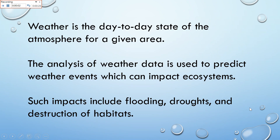Weather is the day-to-day state of the atmosphere for a given area. An analysis of the weather data is used to predict weather events, which can impact ecosystems. Basically, weather analysis is where they take and look at their data and then they predict what the weather is going to be like, so we can decide whether we want to wear shorts or pants or a jacket, or whether we need to carry an umbrella.